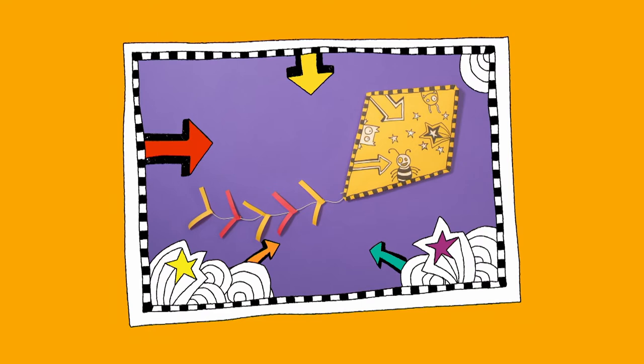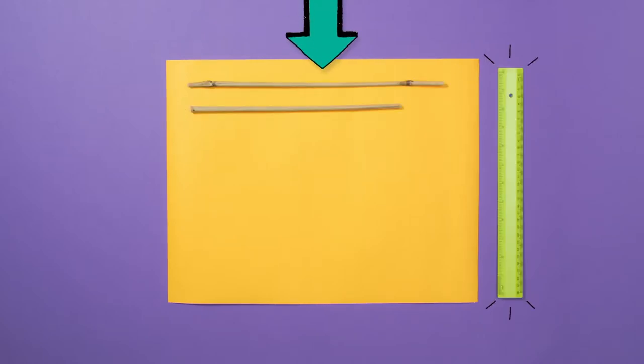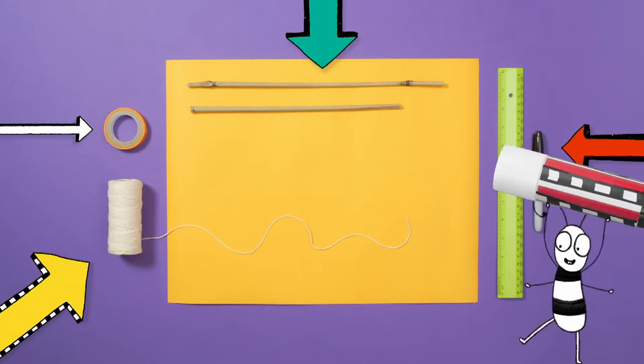Make it! Let's make a Tom Gates kite. You will need a piece of colored paper, two sticks of different lengths, a ruler, a pen, some sticky tape, and some string.